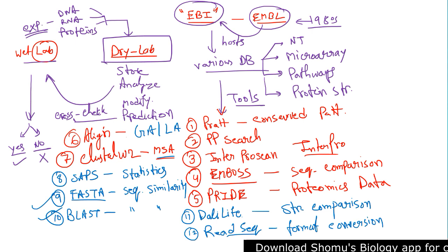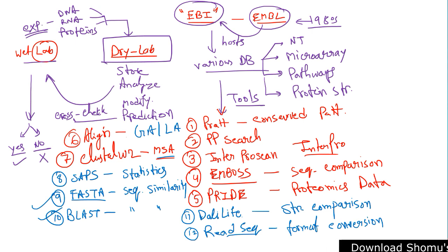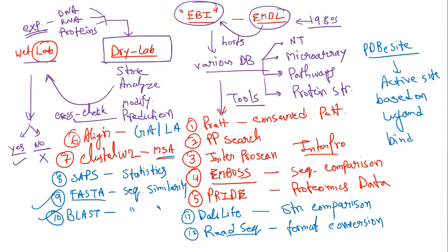There are some more tools available if you open up the EBI site. T-Coffee is also there, which is known for multiple sequence alignment. There is also PDBe Site, which helps us search the active site in an enzyme based on ligand binding — it finds out where exactly the ligand binds. You can check out the remaining tools on the site.